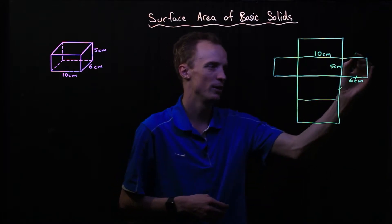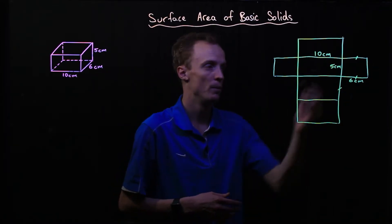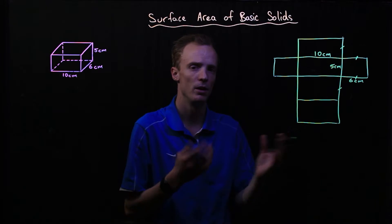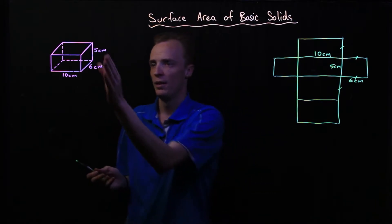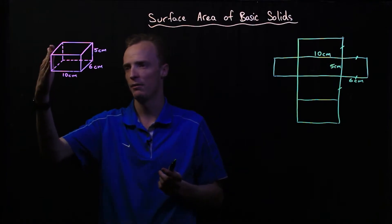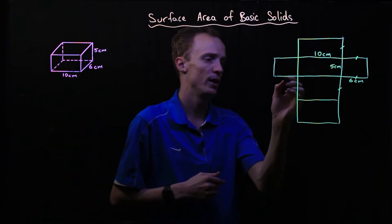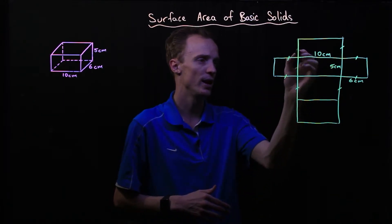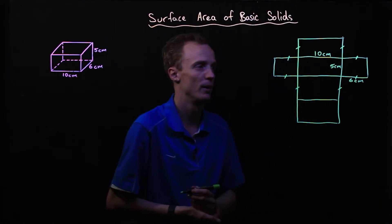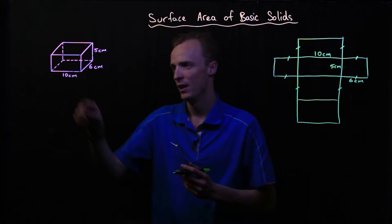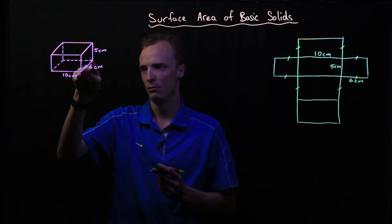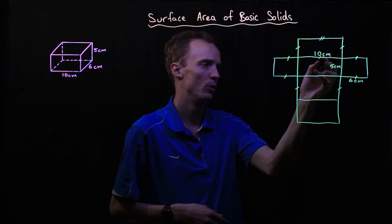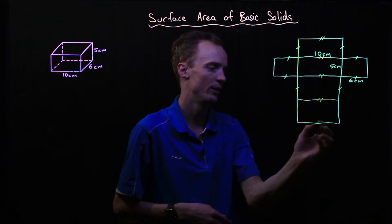For example, this edge here, when you fold it back together, will join with this edge in here, so they both must be the same length — 6 centimetres. Because this is a rectangle, that opposite edge must also be the same, and when folded together it lines up with the matching edge, also 6 centimetres. Since we have a three-dimensional shape, this rectangle is the same as the one on the other side, so both must also be 6 centimetres, meaning all four of these edges around our box must be the same.